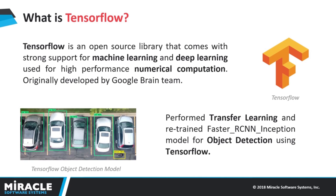Here, we use TensorFlow Object Detection to perform transfer learning. What is transfer learning? Transfer learning is retraining an object detection model. We use transfer learning to retrain the Faster R-CNN Inception model with a custom dataset to detect and count vehicles in an area. We selected the Faster R-CNN model after testing several other models, as it demonstrated higher accuracy.